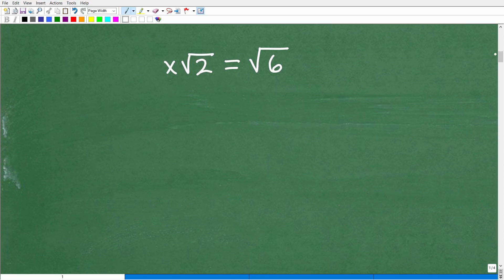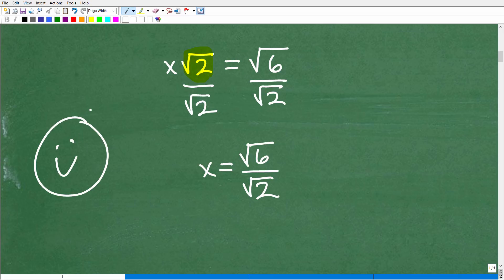All right, so if you're saying, to solve for x, if this is the coefficient, should I just divide both sides of the equation by the square root of 2? Yes, that's exactly what we want to do. We want to divide both sides of the equation by the square root of 2. So we get our answer: x is equal to the square root of 6 divided by the square root of 2. Now, if you got that right, I will go ahead and give you another happy face and a check mark.